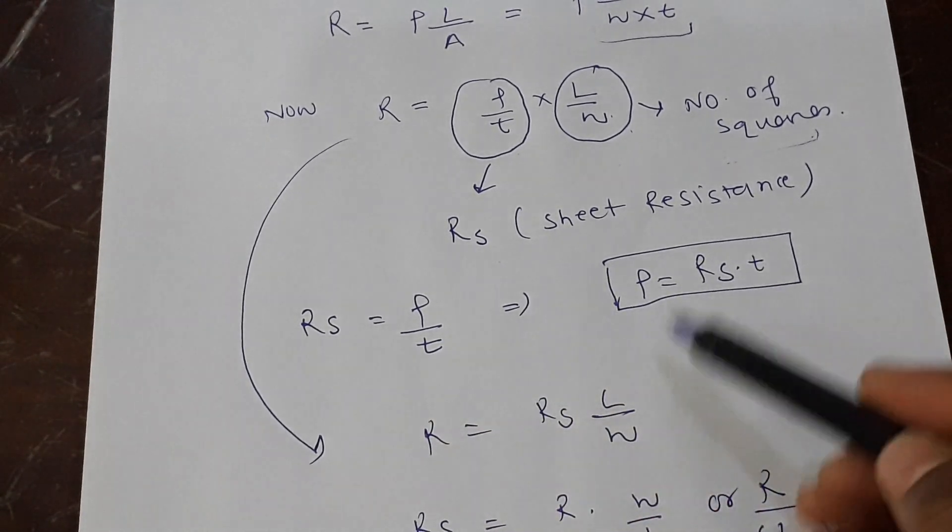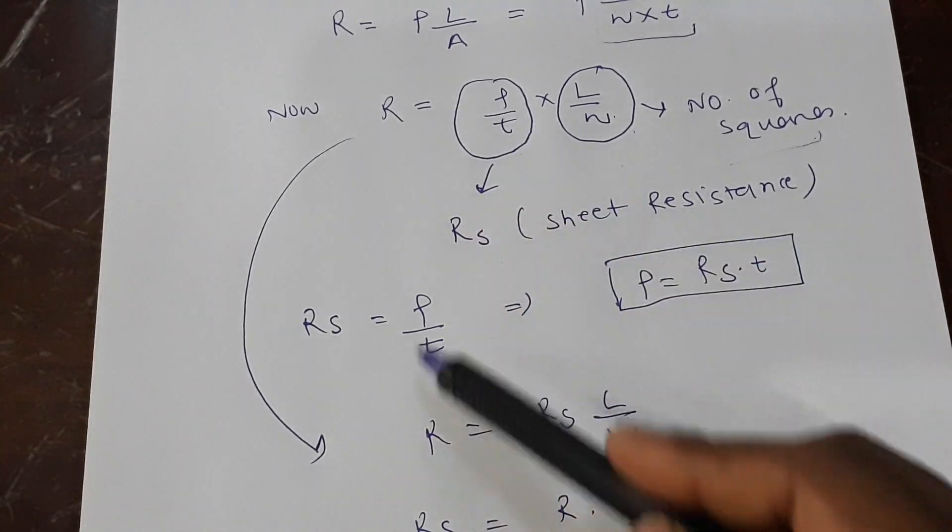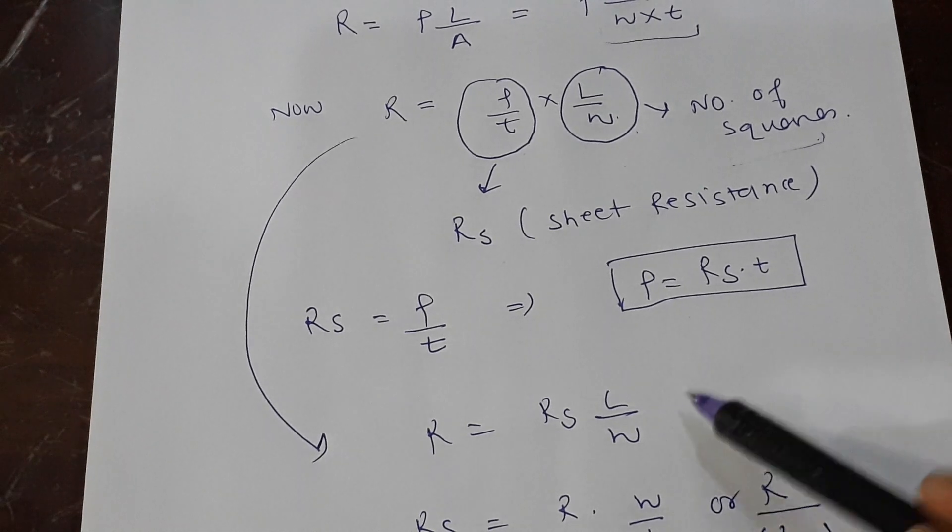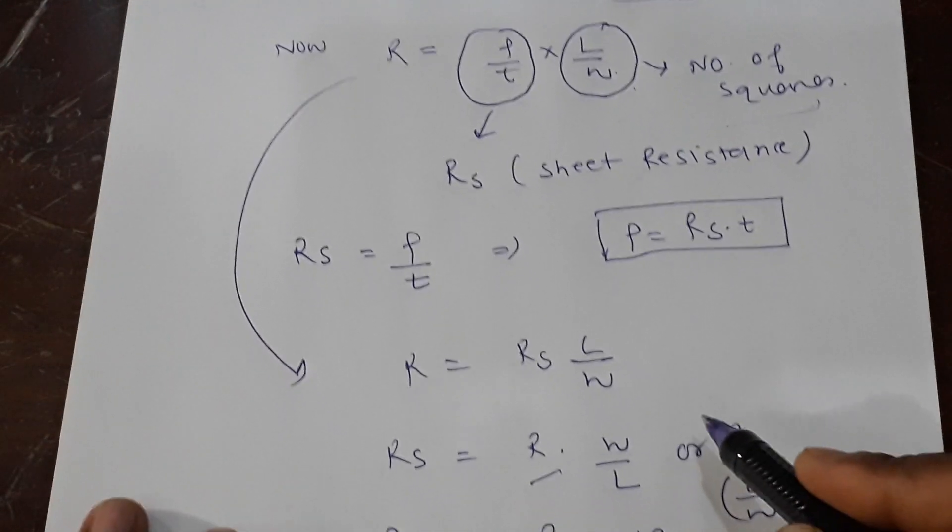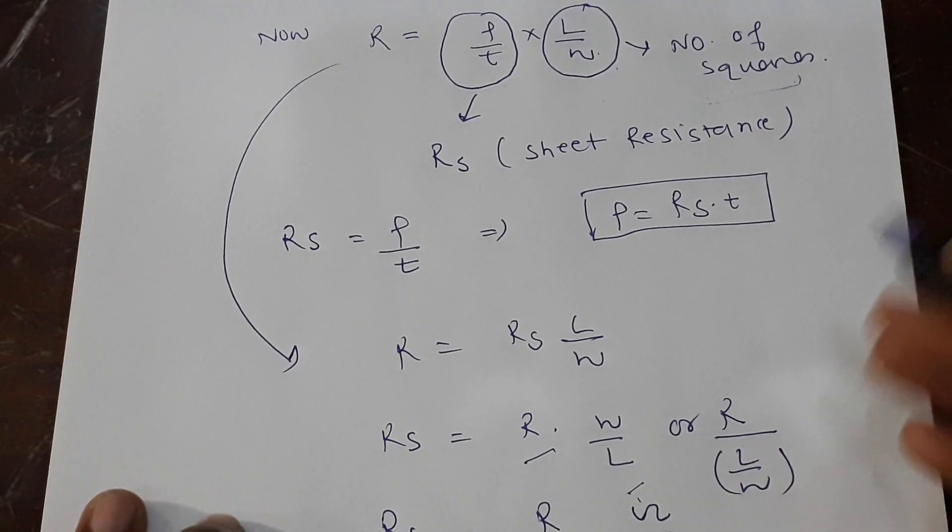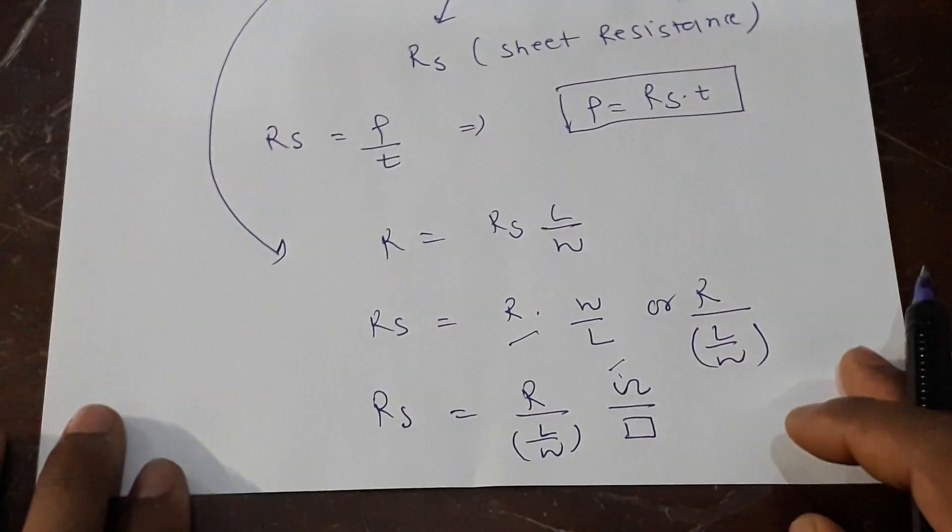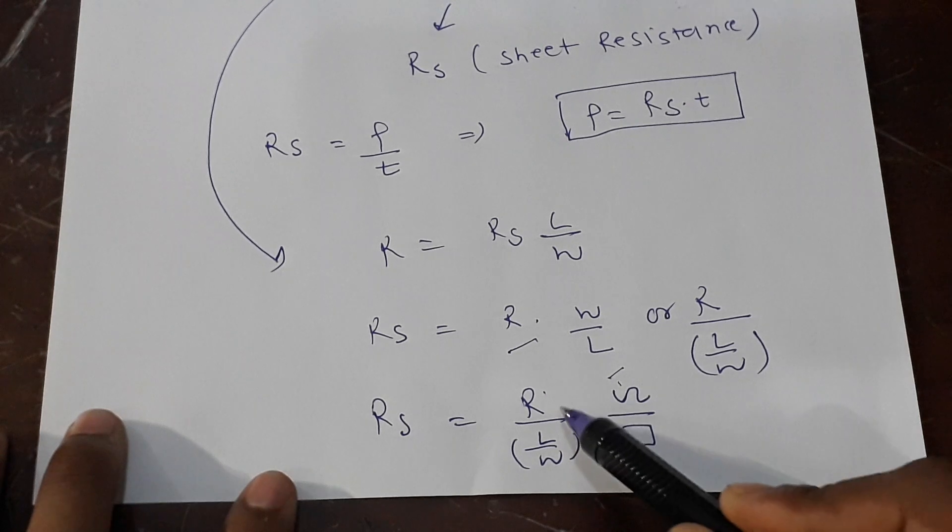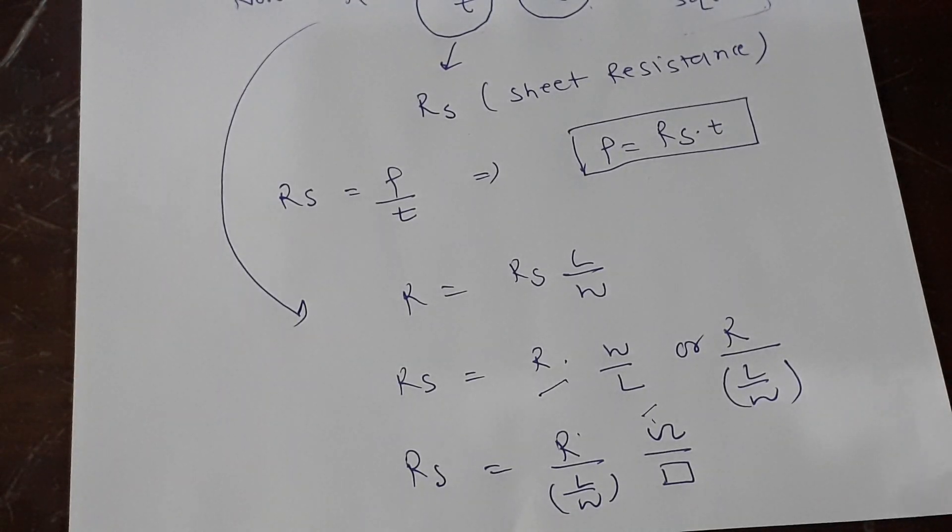From here, Rs = ρ/t, you can deduce ρ also. Now, playing like this, you can find sheet resistance is R times W/L, and if you write it, it comes in this kind of way—R over L over W. So sheet resistance is called ohm per square.